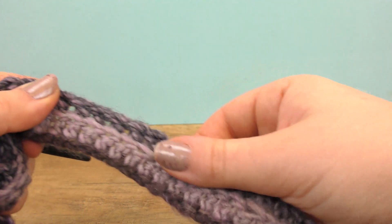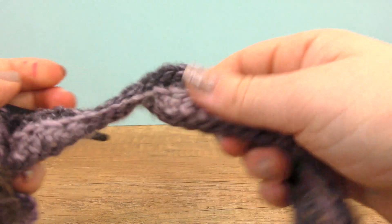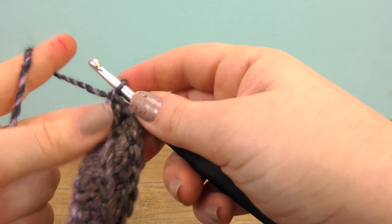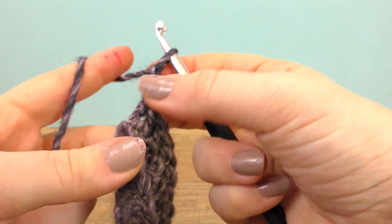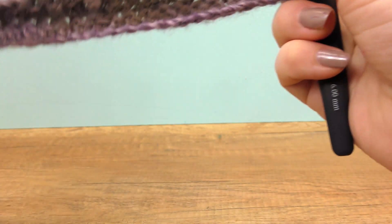So we can now repeat the same. As always, we do two chains for the height and we turn. Then again 25 regular treble crochets, again into the back section of each existing stitch.